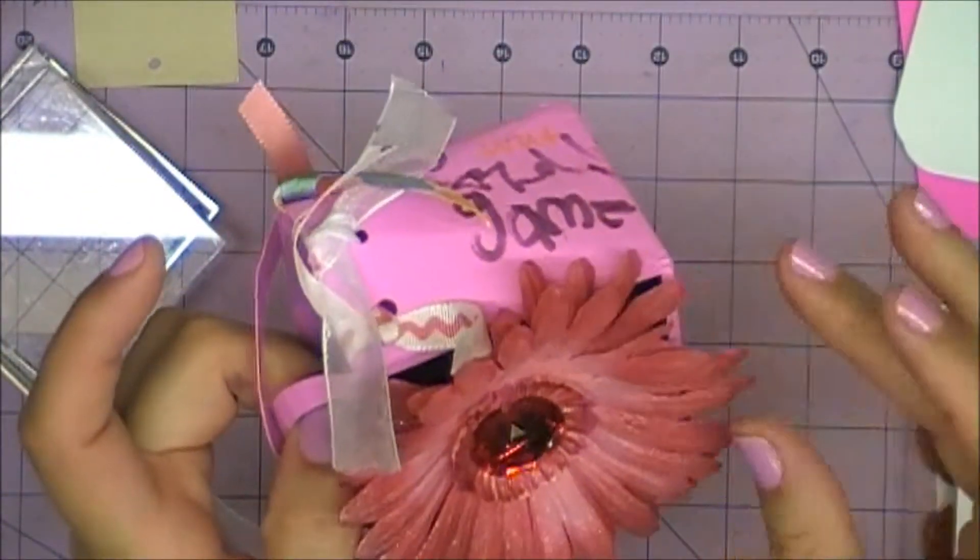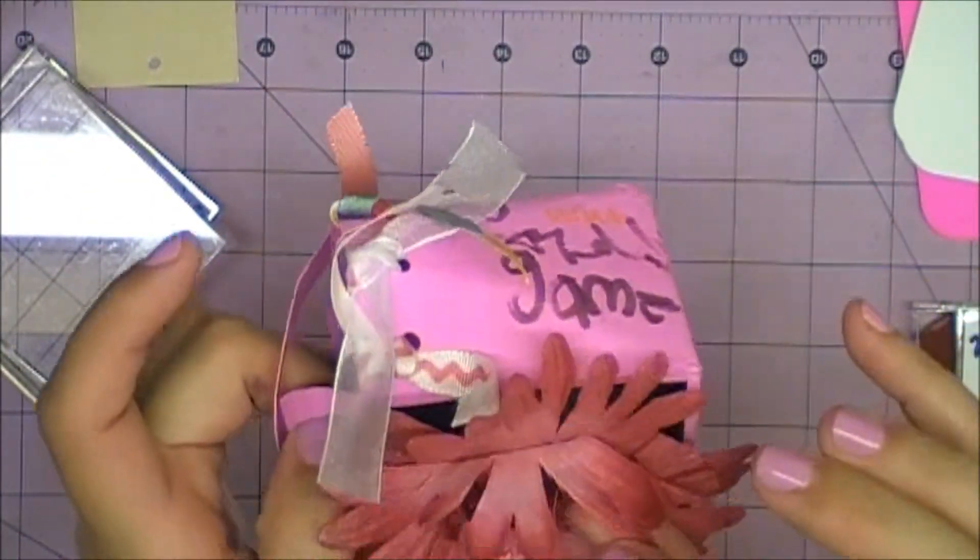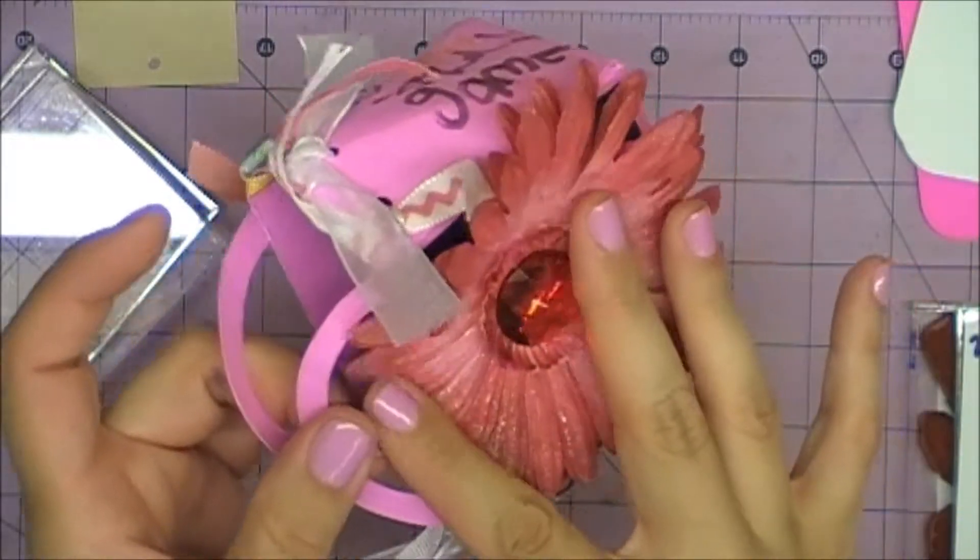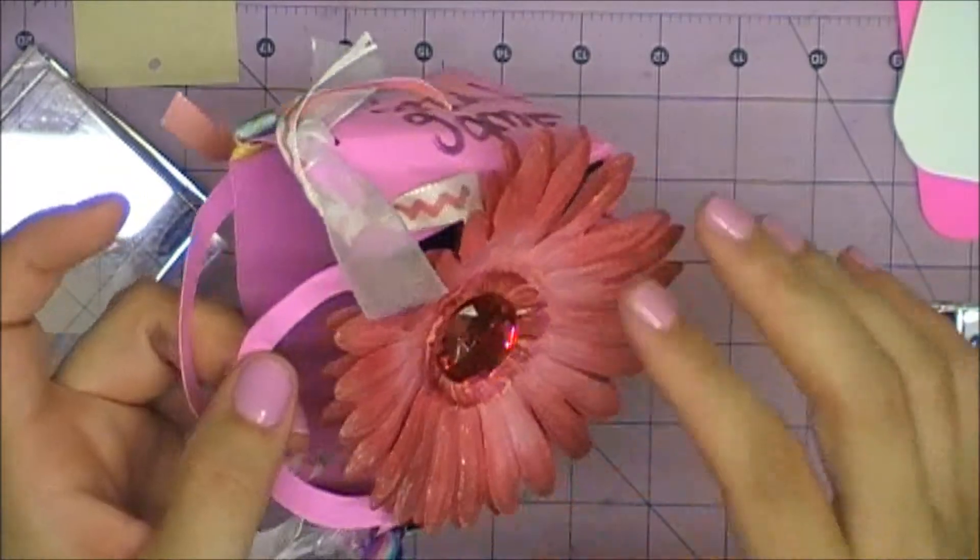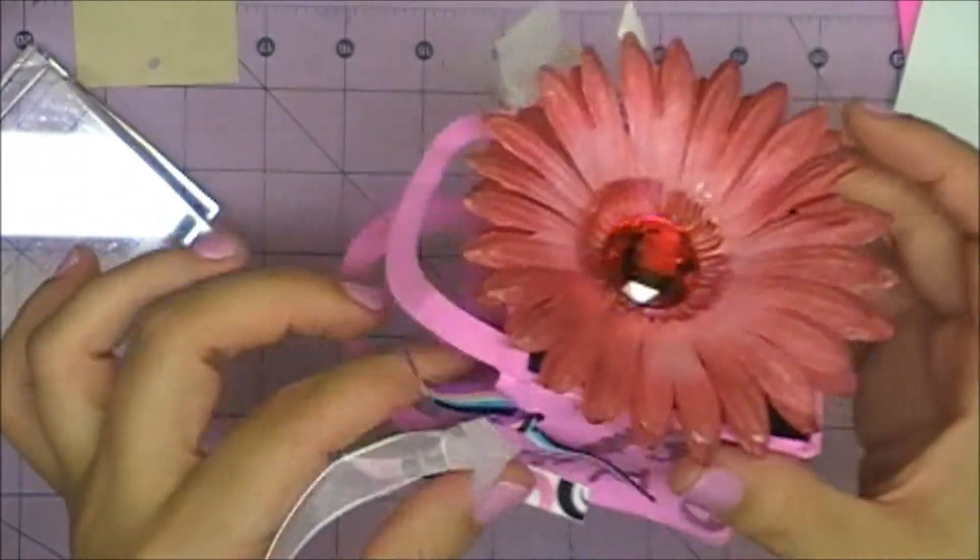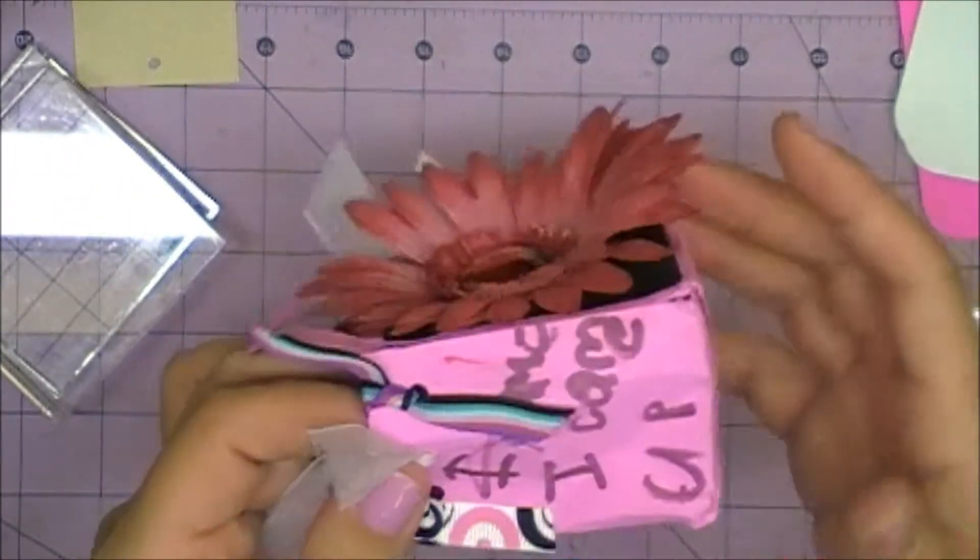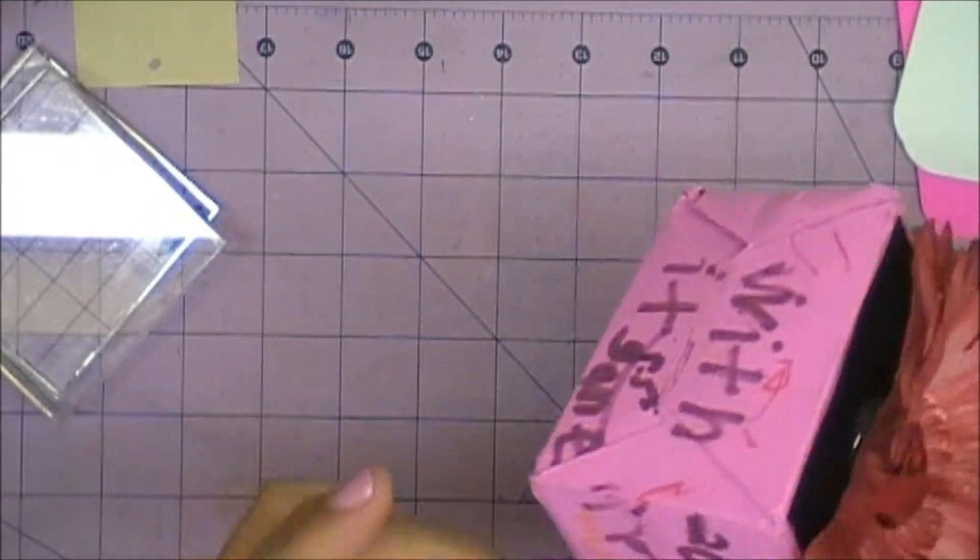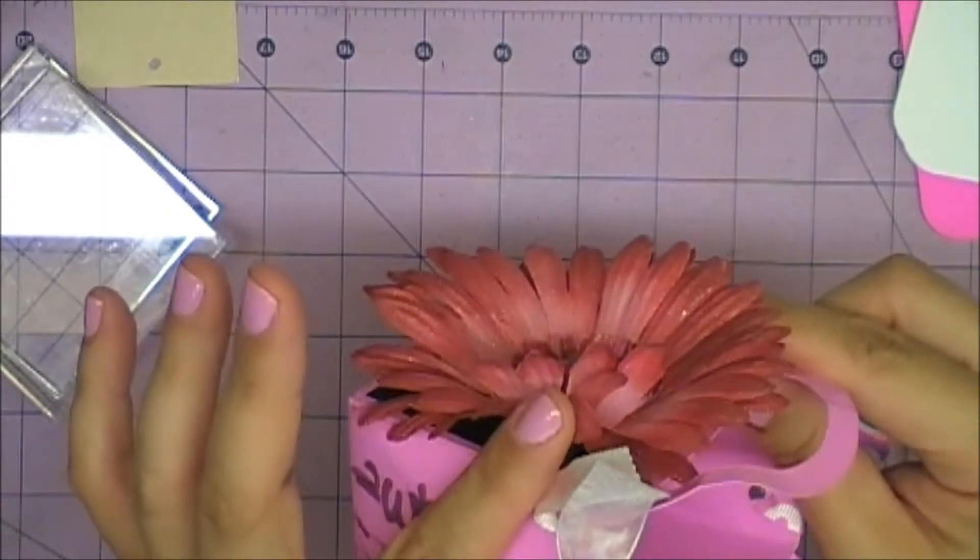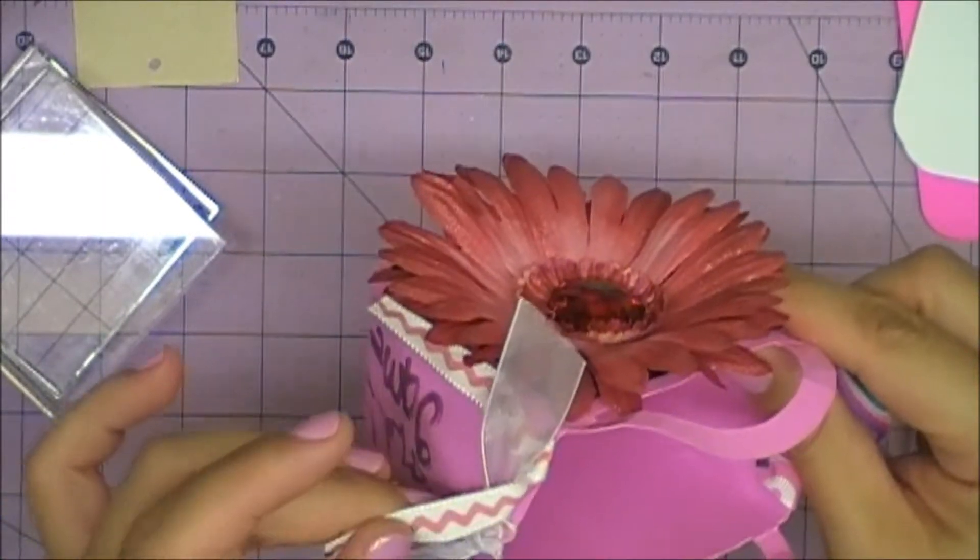And I added one of these giant flowers that I had misted from one of my previous videos and I added a giant gem in the middle. Then I just punched one hole on each side. I just punched a couple extra and just put scraps of ribbon.